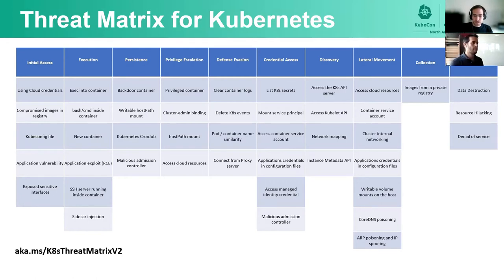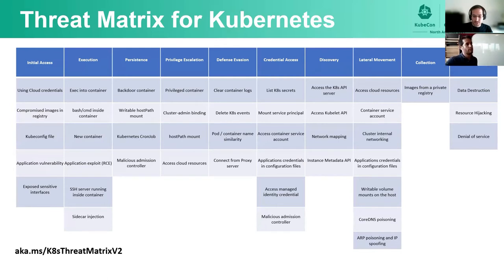In this slide, you can see the second version of the matrix that we released earlier this year. Like MITRE, we split the matrix into tactics, which are the columns in the table shown in dark blue. In each tactic, there are techniques, which are the specific methods that attackers might use. We won't go over all the techniques right now, of course, because there are many. You can read the full matrix at the link below.